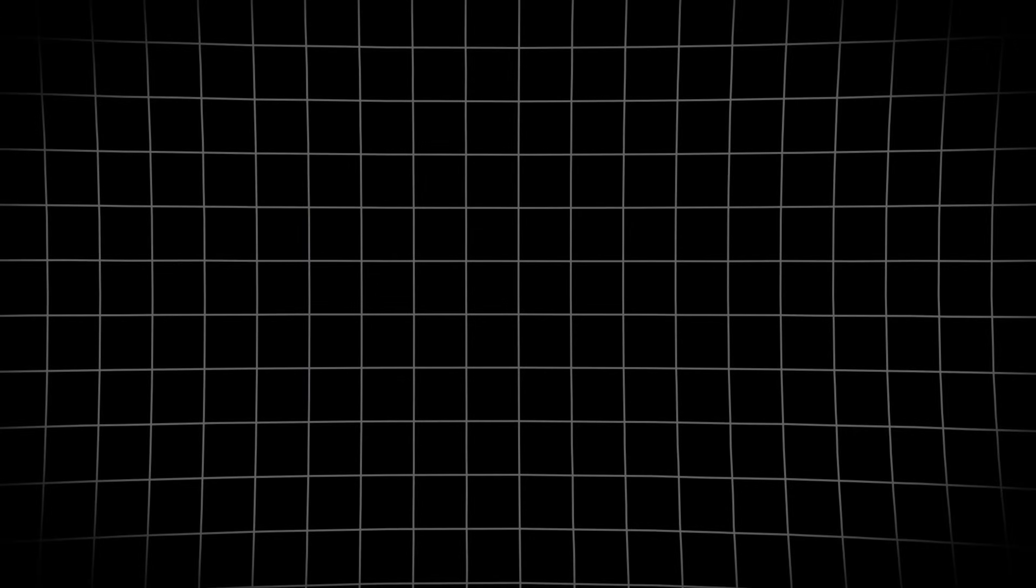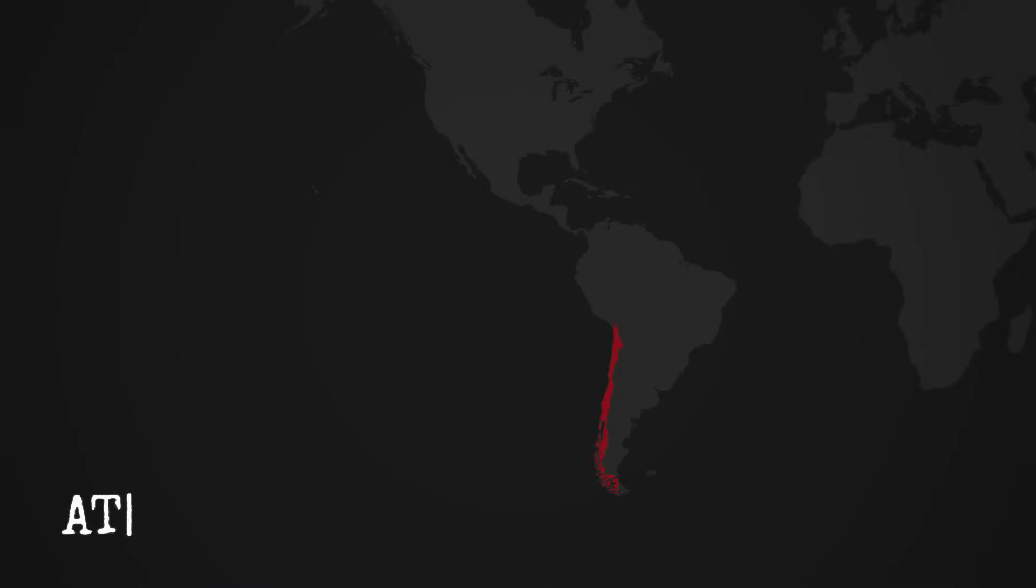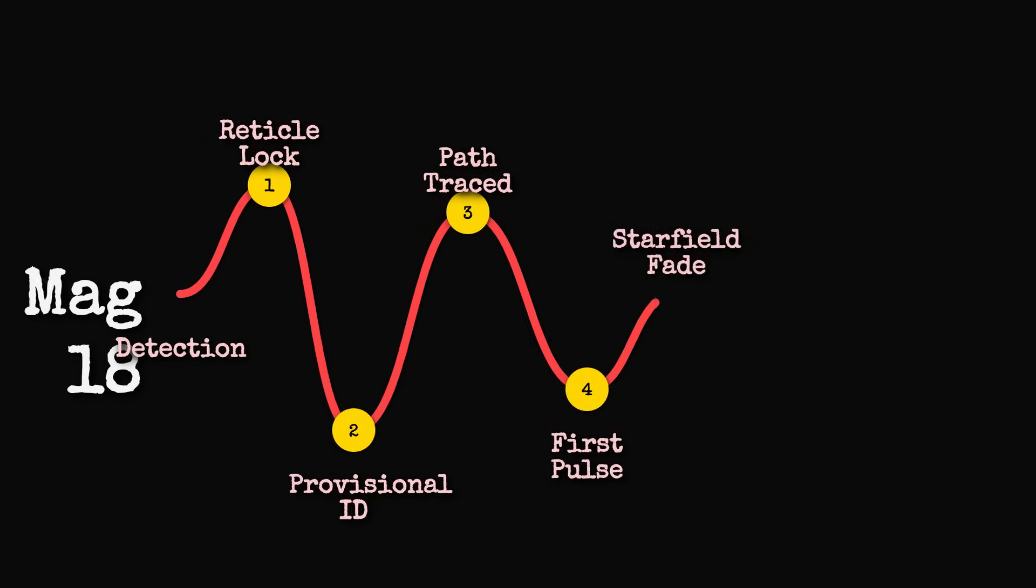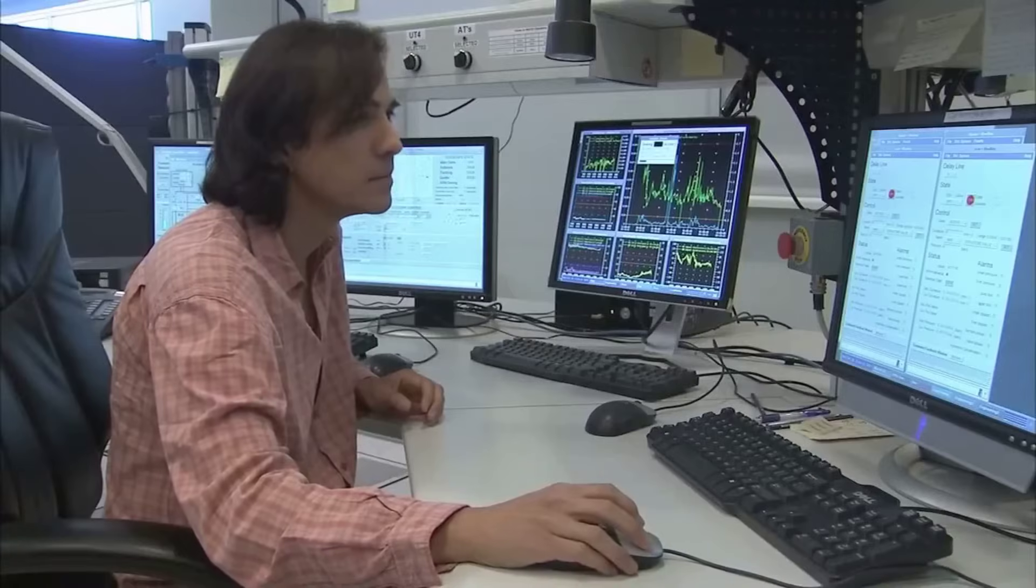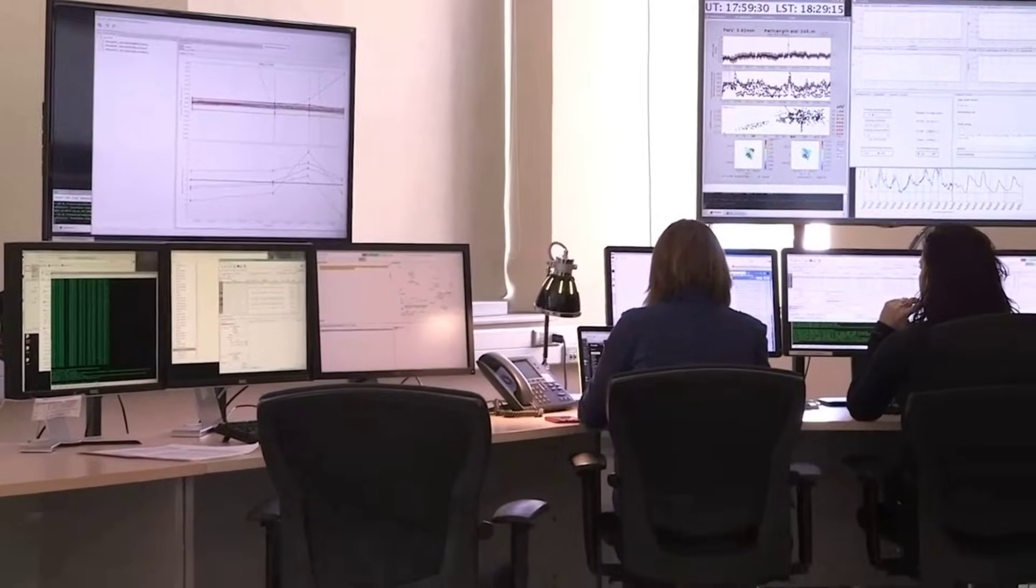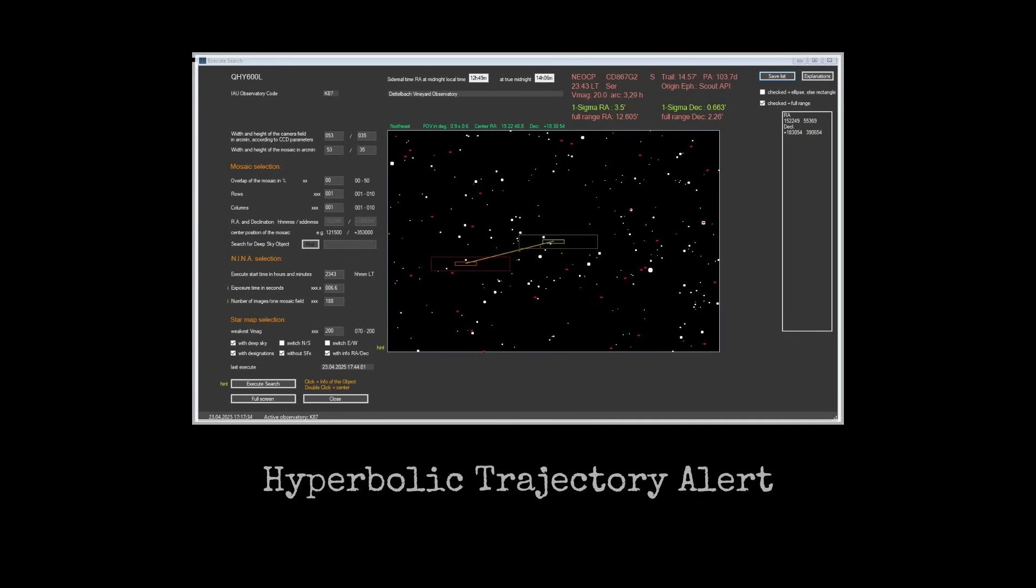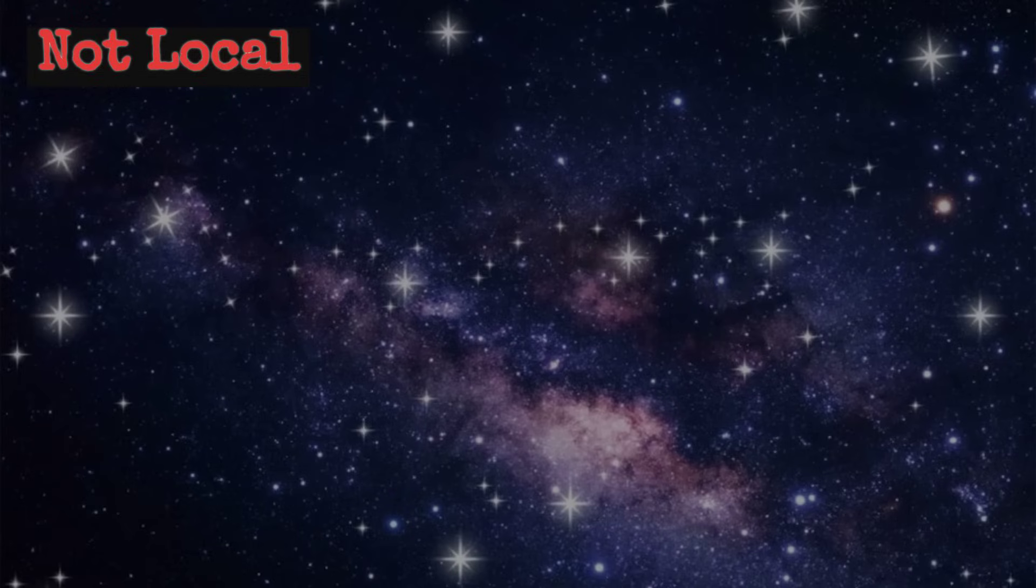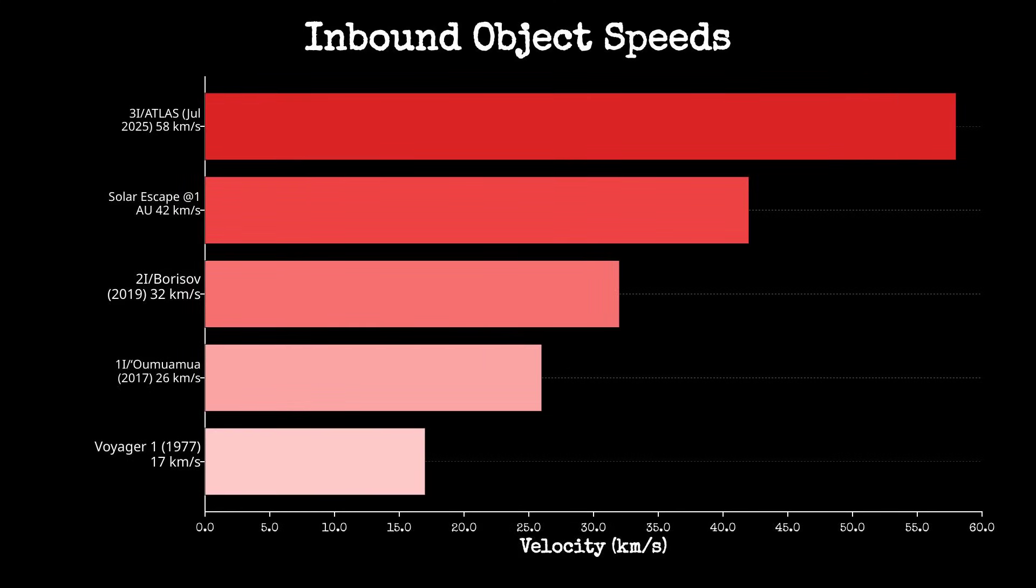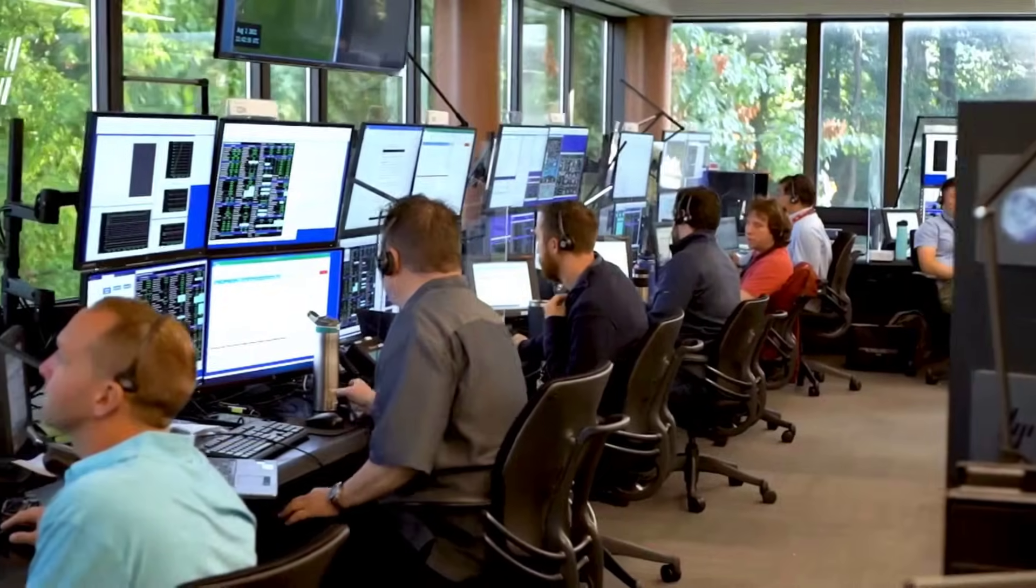July 1st, 2025. The Atlas Telescope in Chile logs a faint, fast-moving object at magnitude 18, threading through the star-crowded backdrop near the galactic center. The night crew, veteran survey operators and graduate students, switch from routine monitoring to rapid-fire checks. Trajectory software pings a hyperbolic path, the numbers blinking red: 58 kilometers per second. Not a local wanderer. Not a returning comet. The object is inbound from interstellar space, moving faster than anything previously tracked, outpacing even Oumuamua and Borisov.